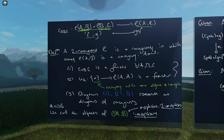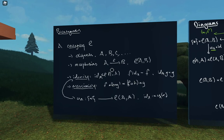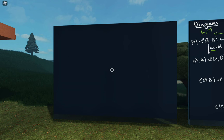Now would be a good time for questions. I'm still thinking about the diagram commuting as a category. If you compose the two paths from top left to bottom right, you get two different functors — is there a natural isomorphism between them? No — it means they're literally equal as functors. That's sort of what the bicategory does: it relaxes that strict requirement.